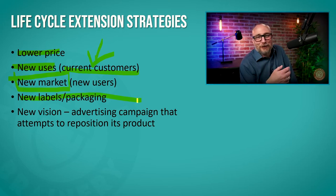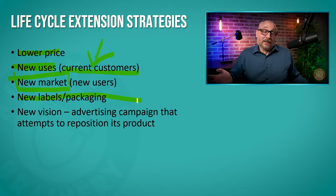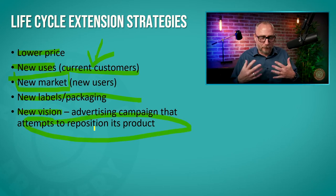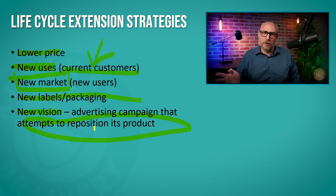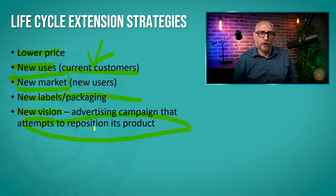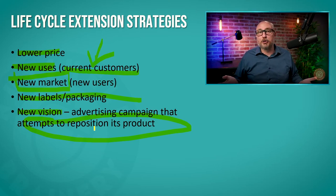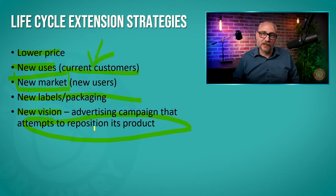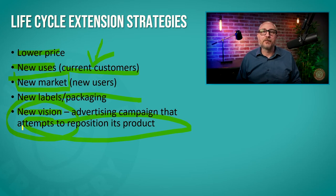Of course, you've seen new labels and new packaging — companies are always changing labels and packaging as a way to extend the life of a product. And then you can get new versions, attempting to reposition the product as something new. For example, I'm seeing commercials right now for the Apple iPhone 12 promoting that it comes in purple. That's about as far as innovation goes with Apple these days, but they're still saying it's a new version.